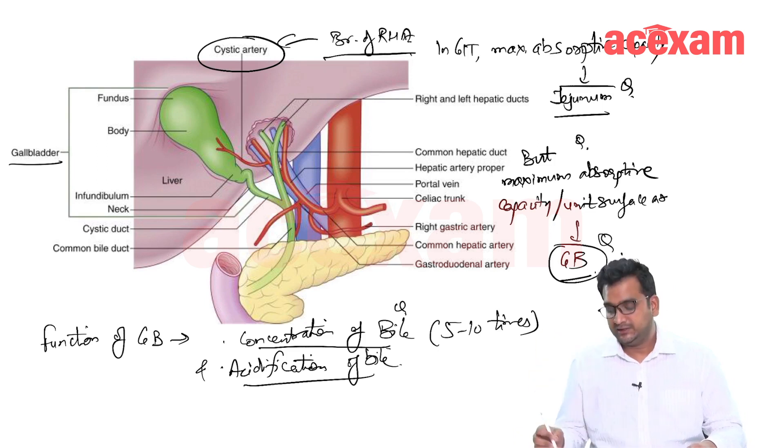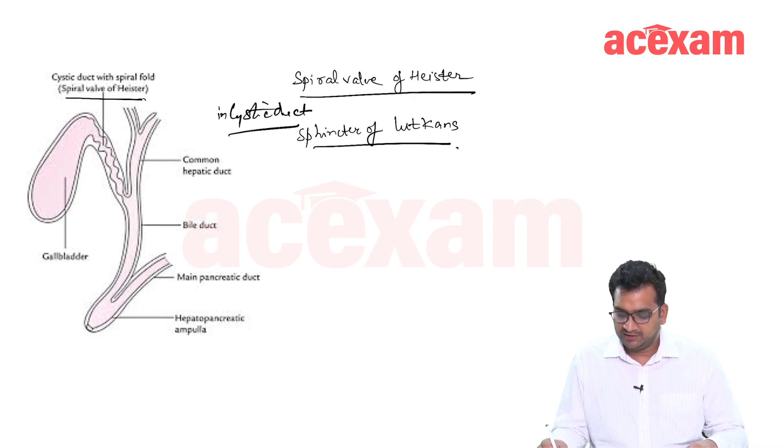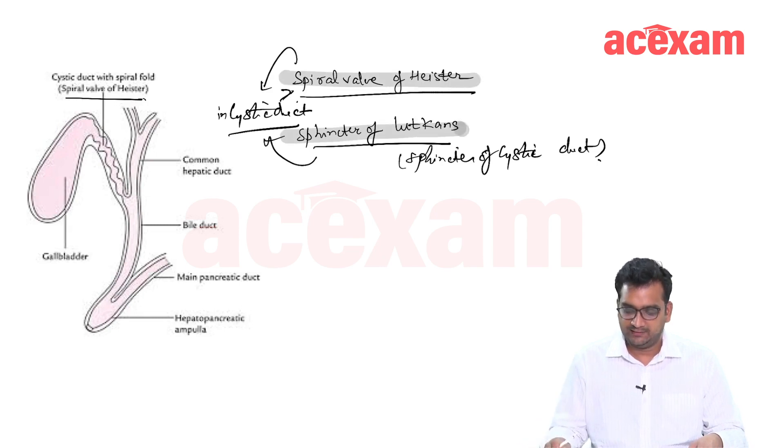And this cystic duct, it joins the CHD to form CBD. And there are two structures in the cystic duct. One is a spiral valve of Heister. The question is spiral valve of Heister is seen in cystic duct. Sphincter of Lutkens is the sphincter of cystic duct and it is seen in cystic duct. So these two points are important to remember: spiral valve of Heister and sphincter of Lutkens.